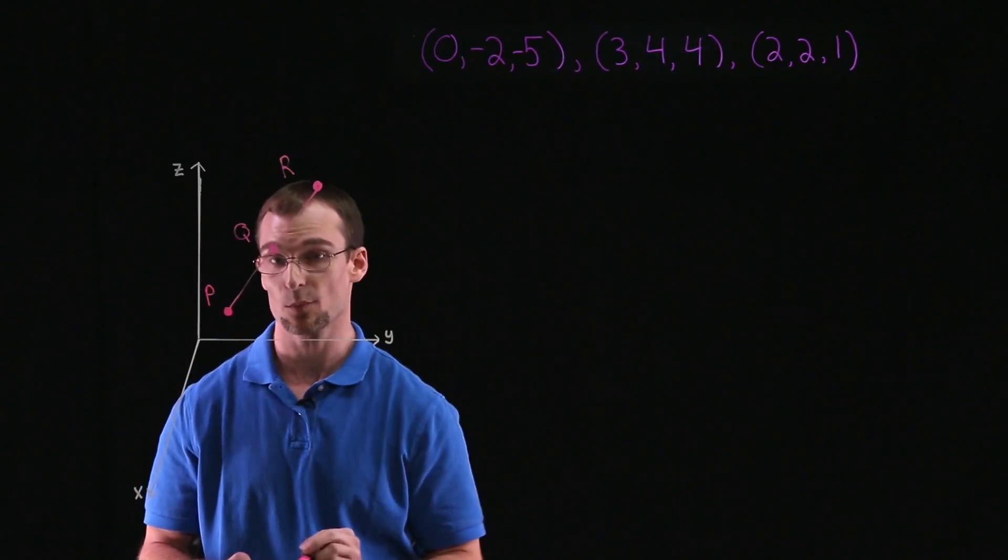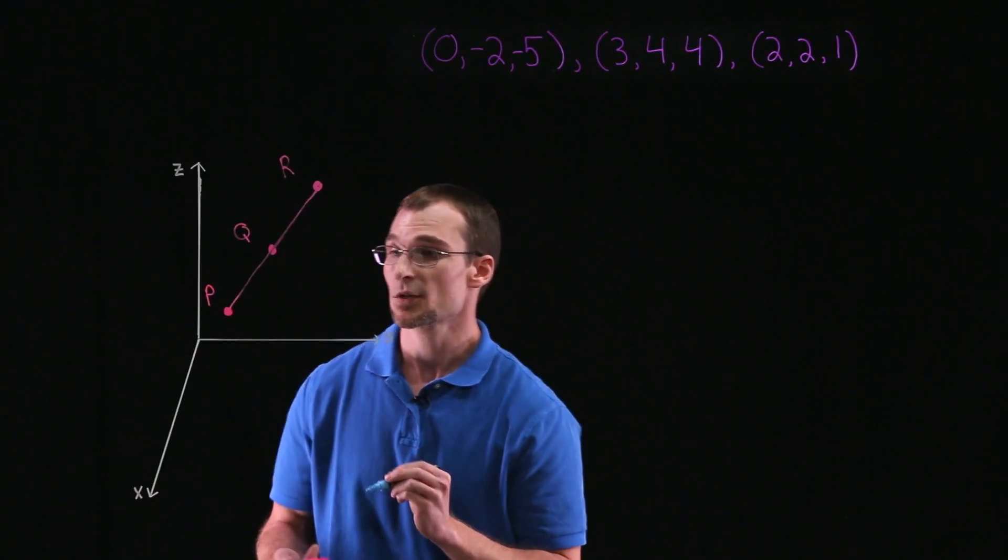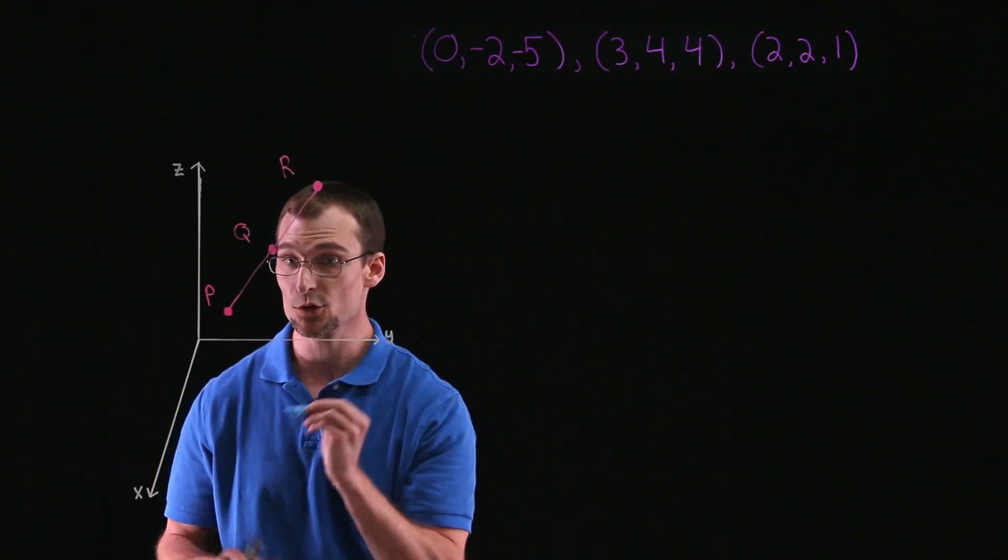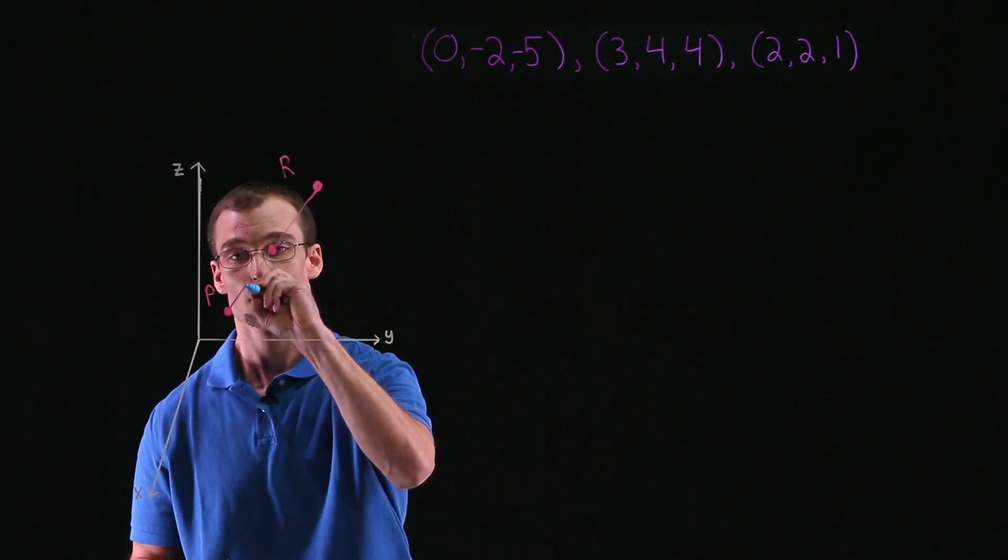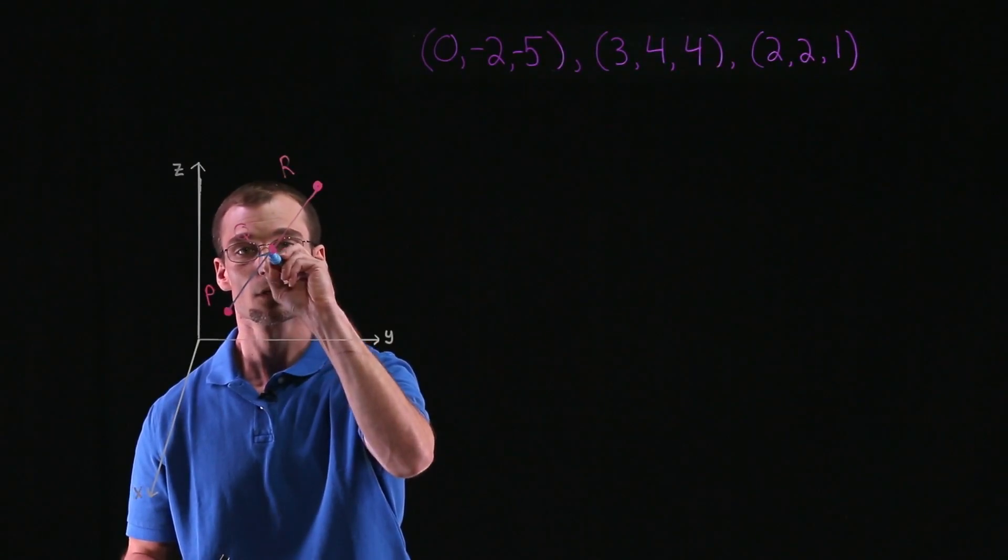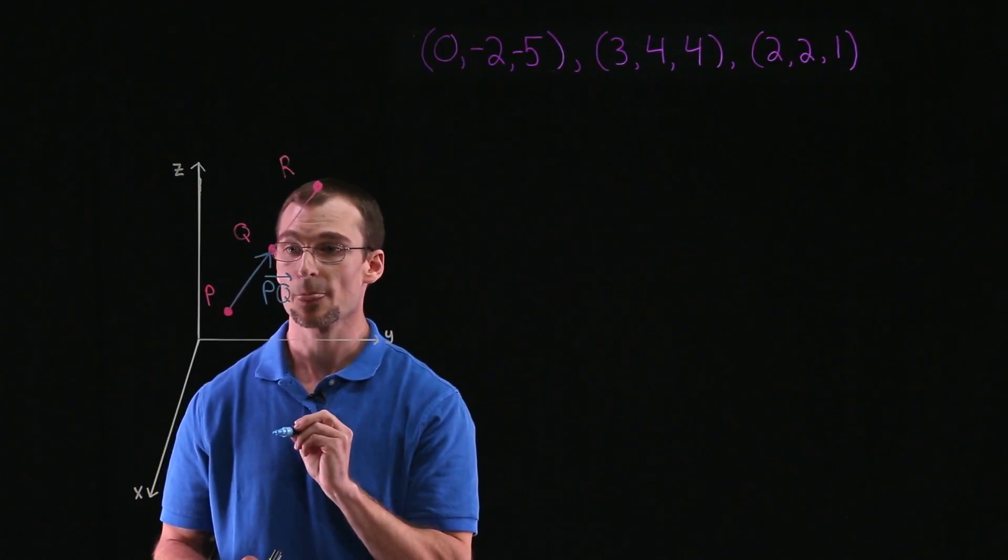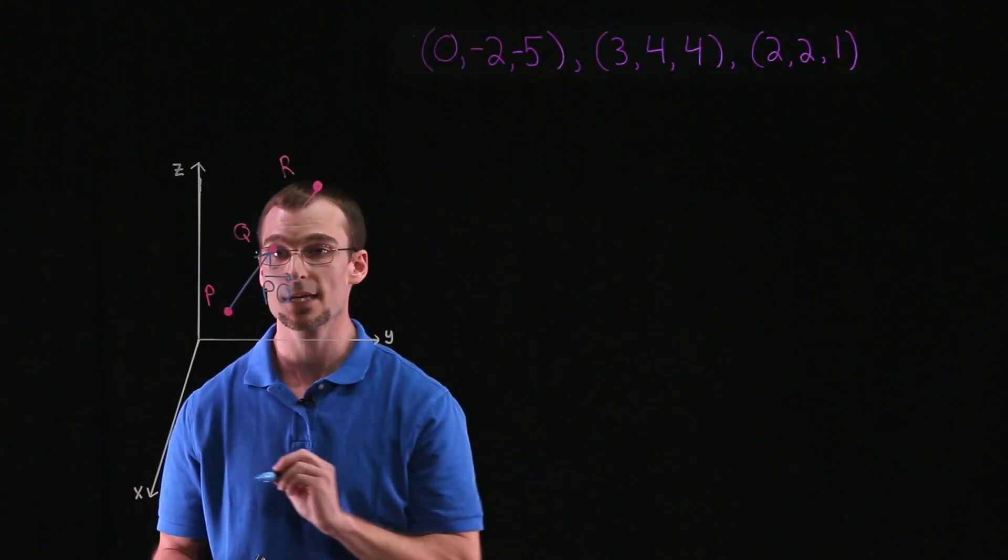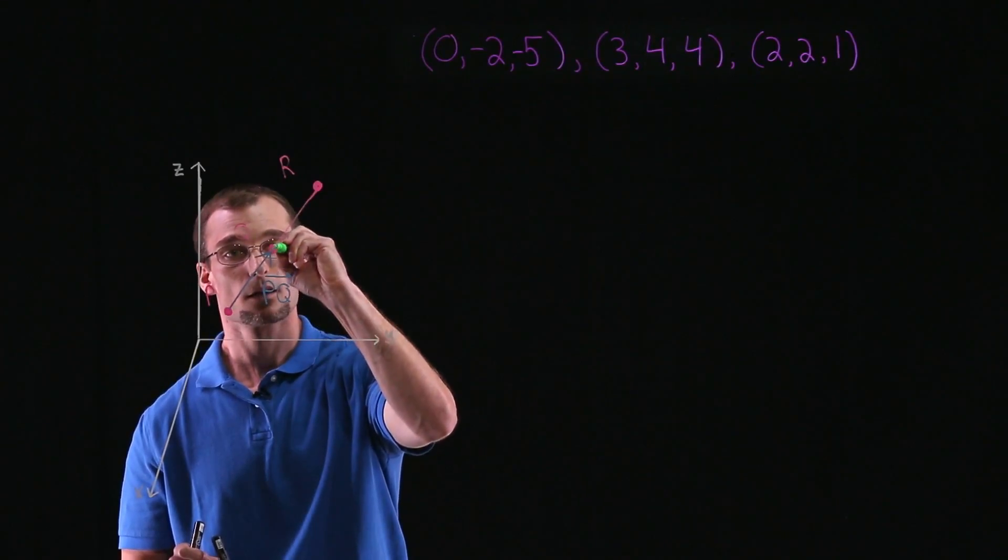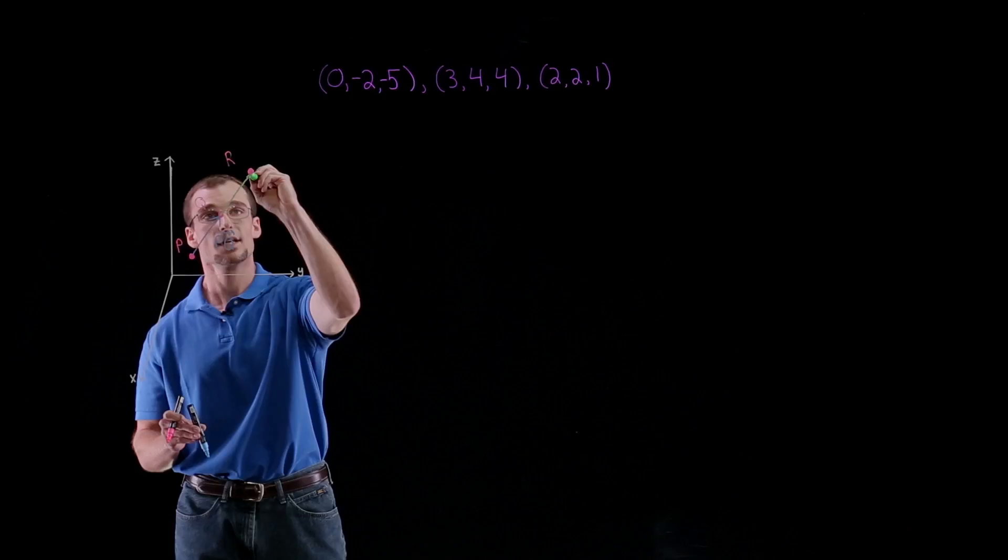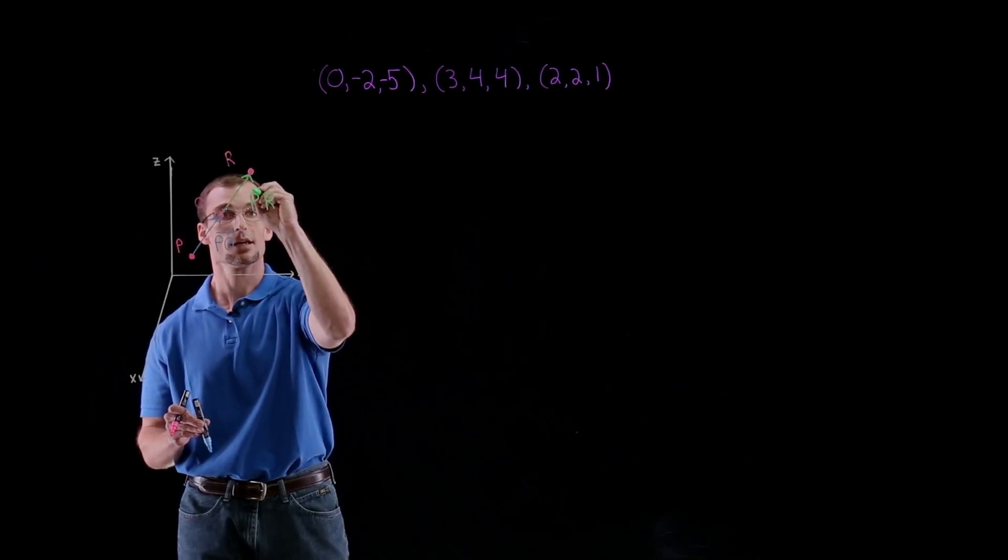Now, how can vectors help us? Well, with vectors, consider the vectors between the points. So we can have a vector, if we treat P as our initial point or starting point, we can have the vector between P and Q given by that directed line segment. And we can also have the vector between P and R. So from P, think of extending, we have the vector from P to R.